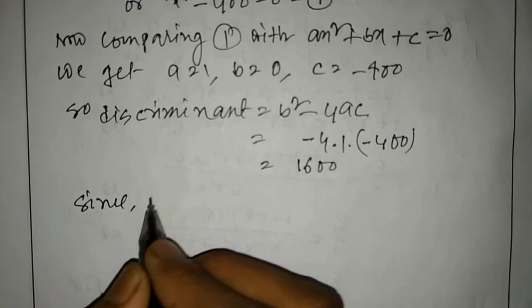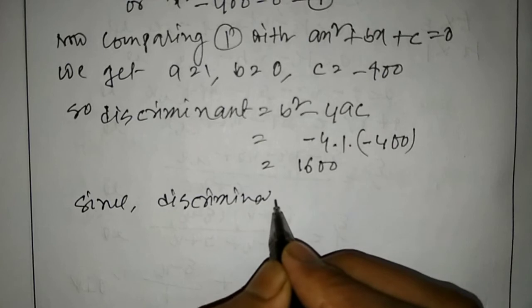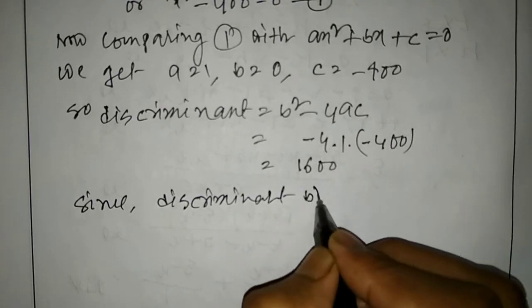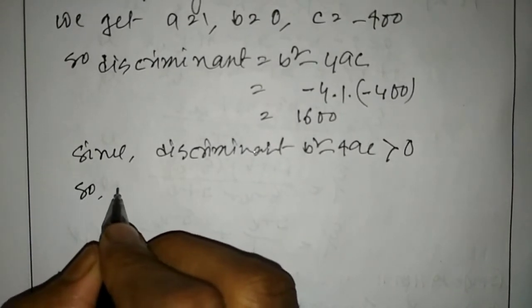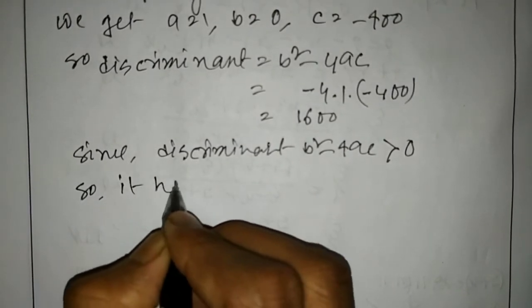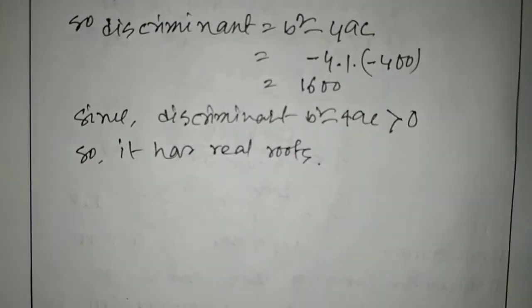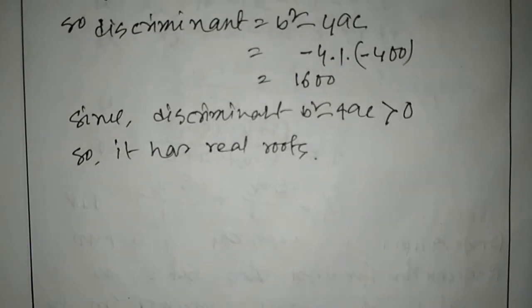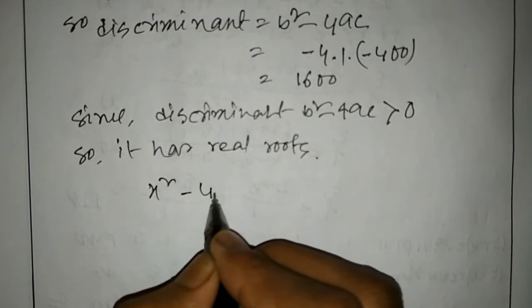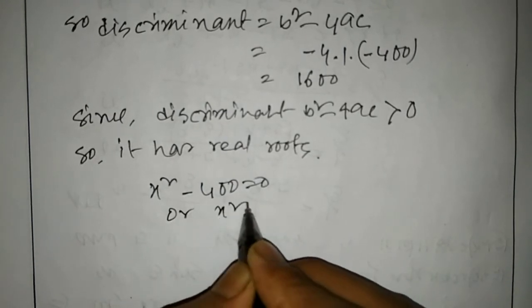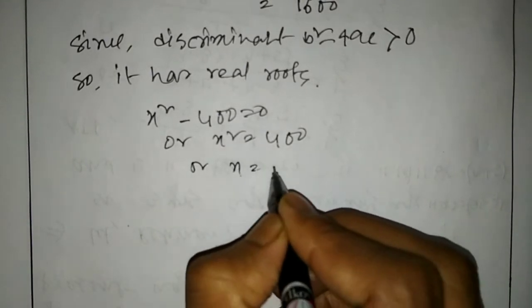The discriminant is b squared minus 4ac equals 0 minus 4 times 1 times (minus 400), which gives 1600. Since discriminant is greater than 0, the equation has real roots.